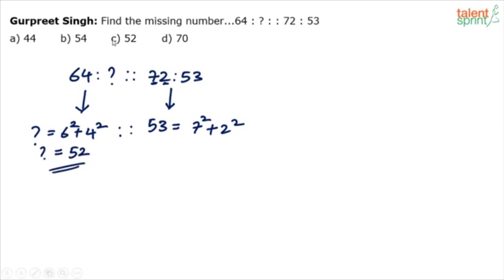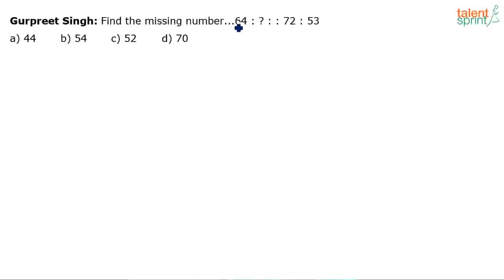6 square is 36, 4 square is 16, 36 plus 16 is 52. So yes, we can conclude that the question mark is 52, option C. This sounds appropriate and option C, 52, can be taken as the correct answer. This is basically a number analogy based question.